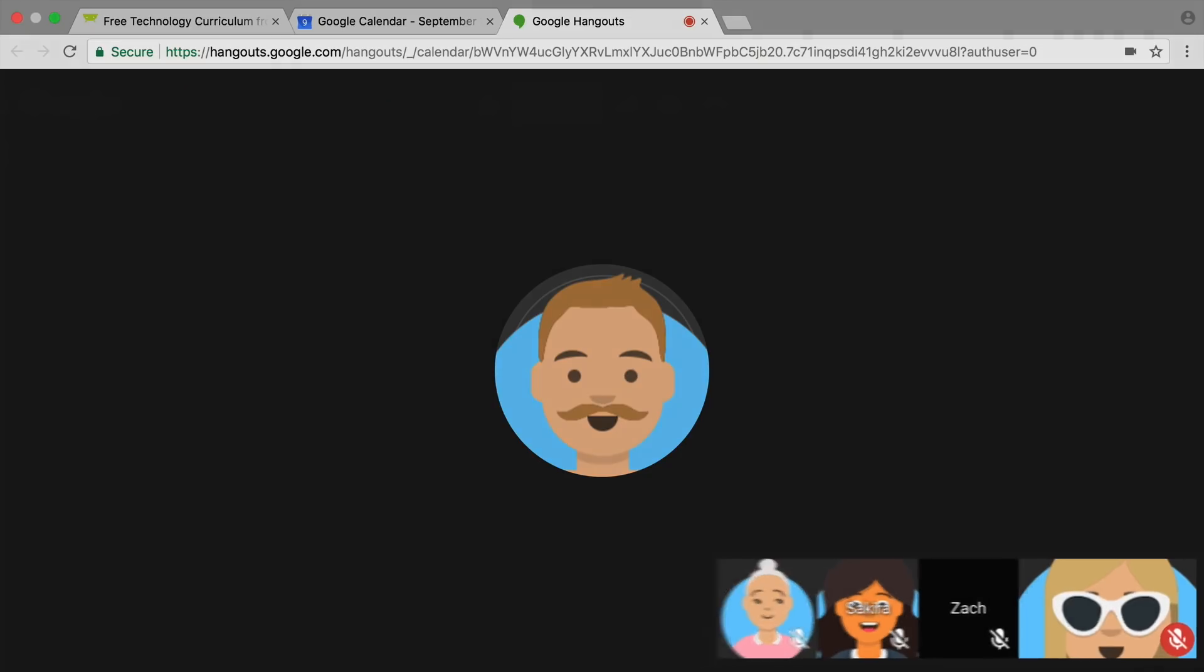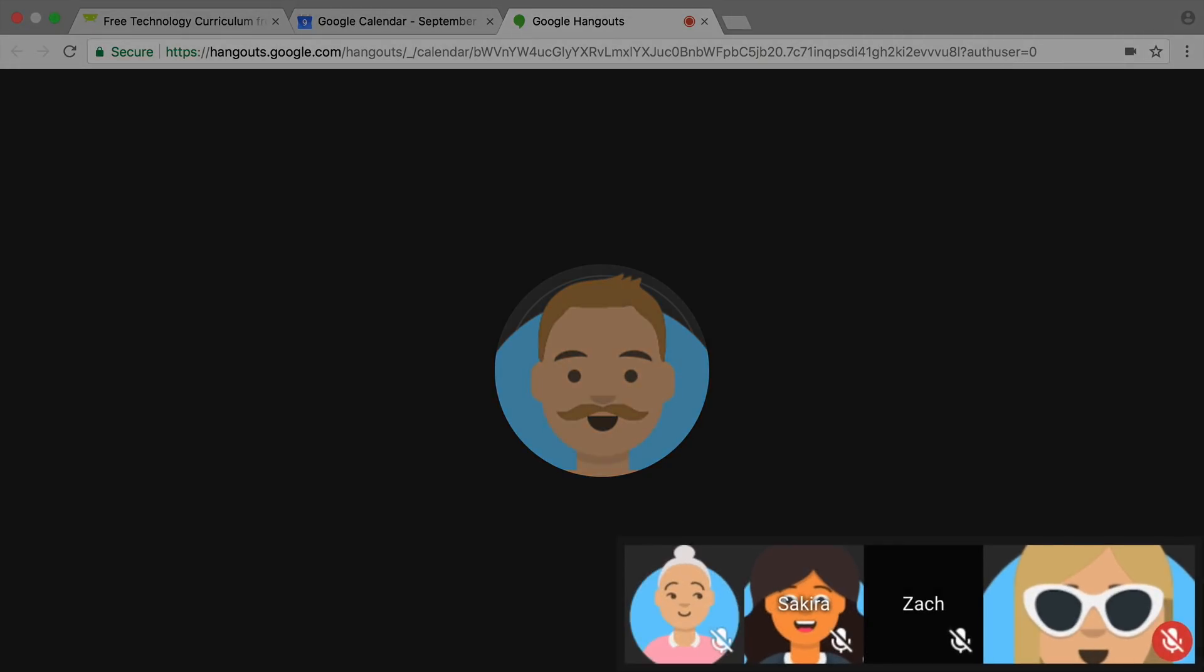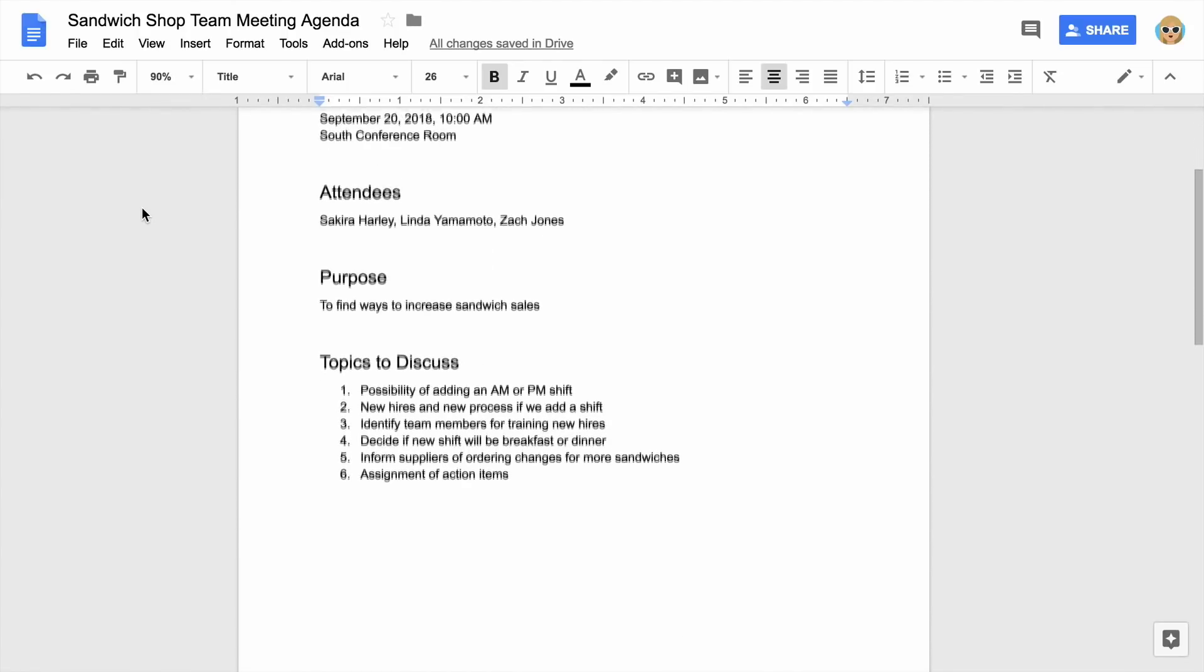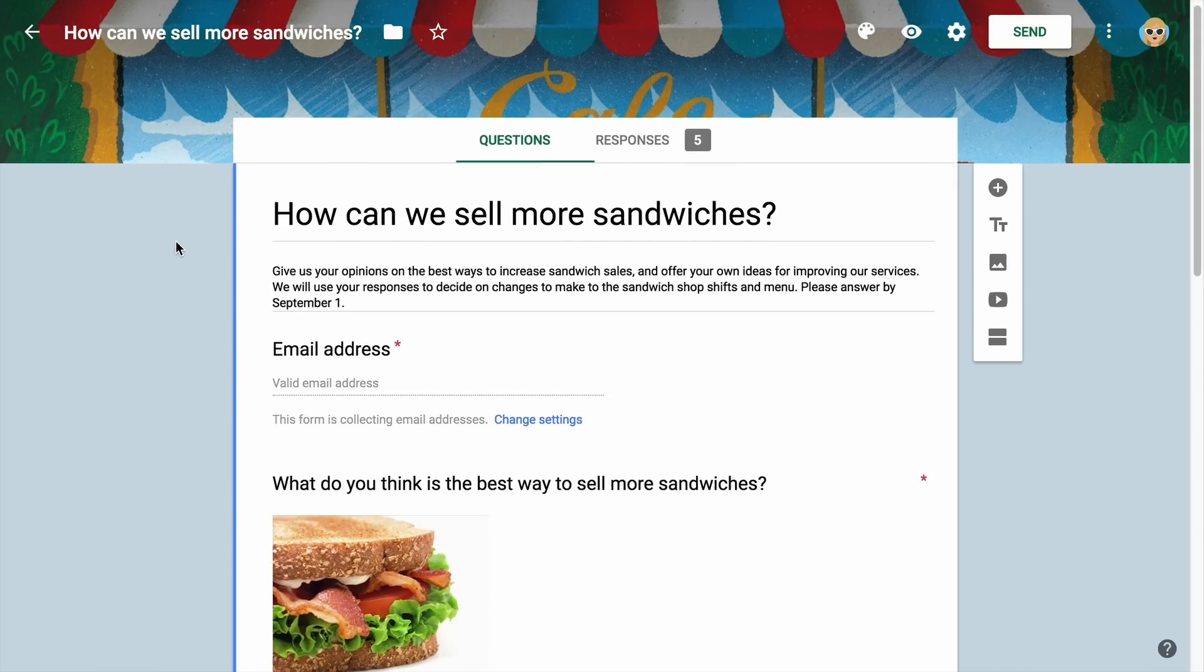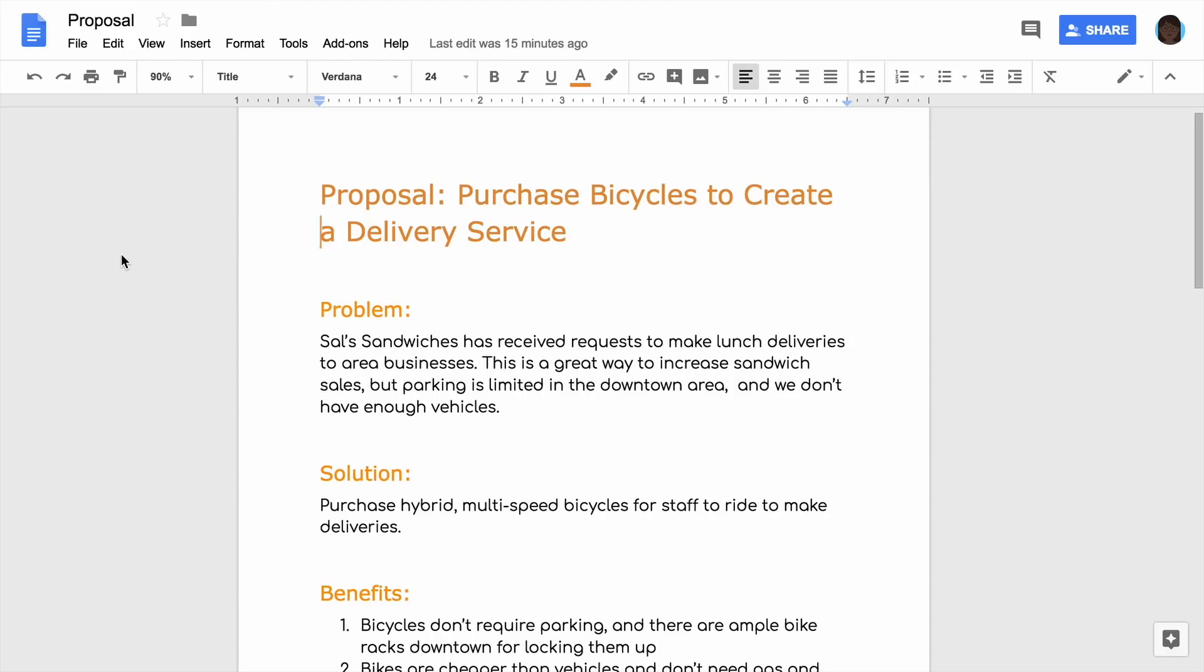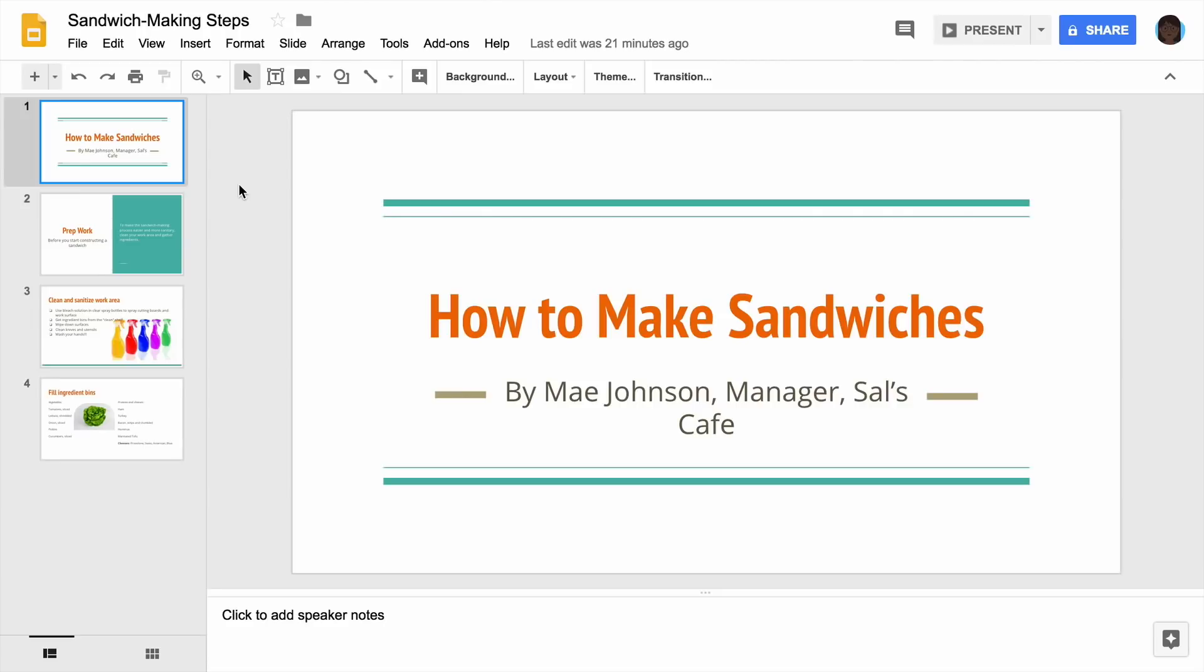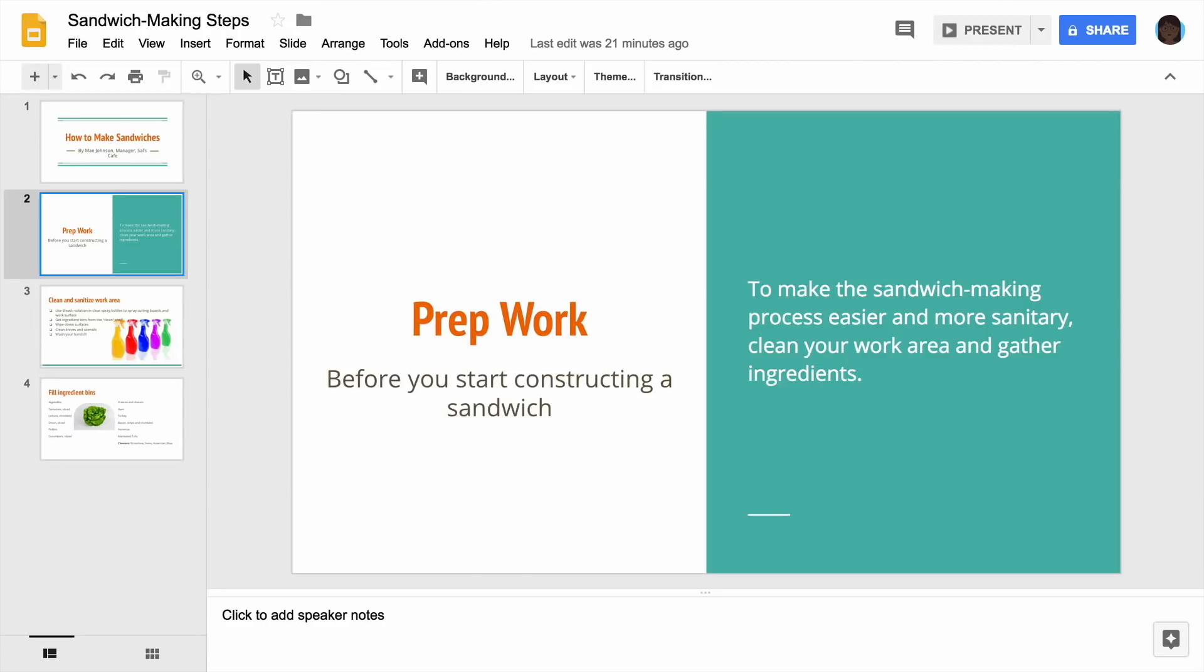This unit includes four activities. Do them in any order or skip to the ones that interest you most. You will hold a team meeting on Google Hangouts and organize materials in a document, collect feedback from employees in a digital form, and create and share a proposal for a new idea in a document. Then, you will present the information to an audience.